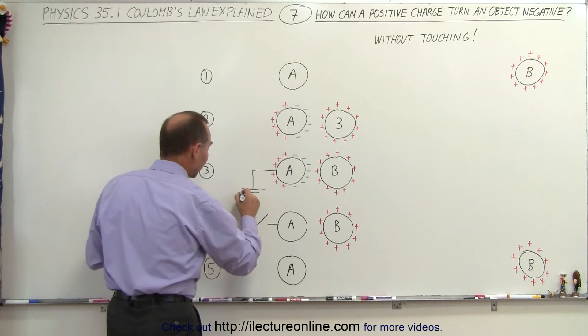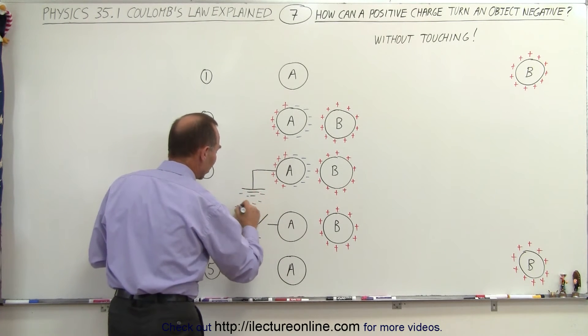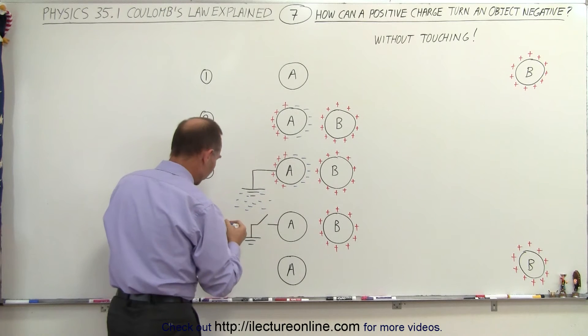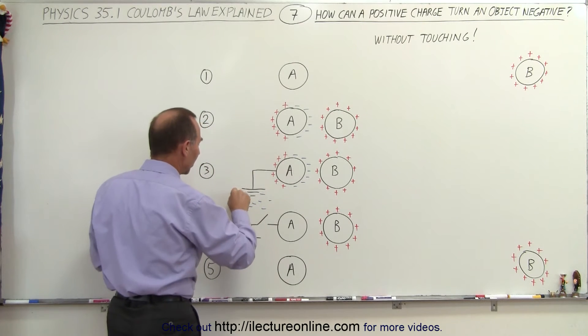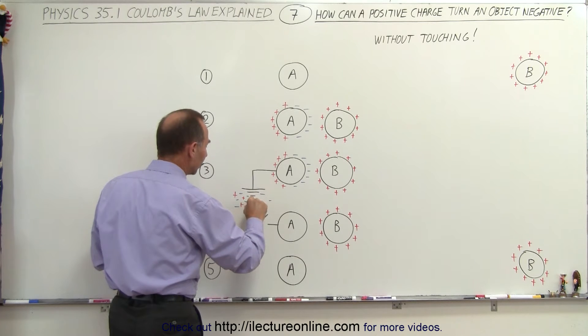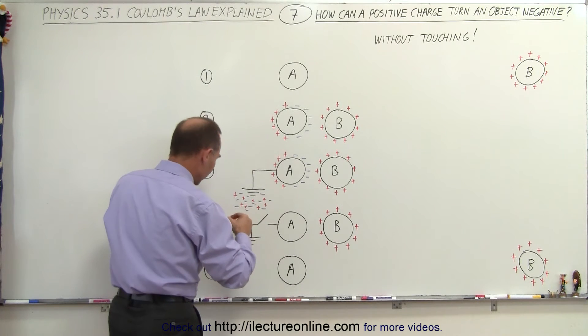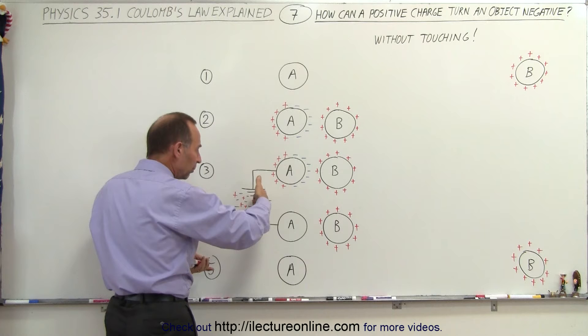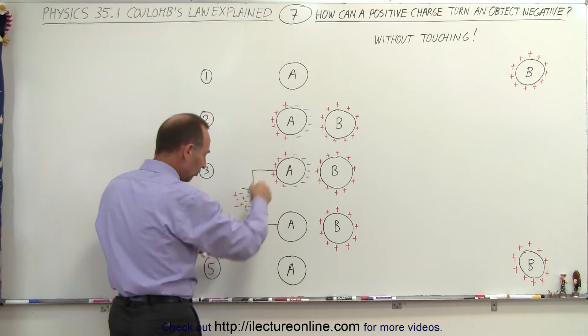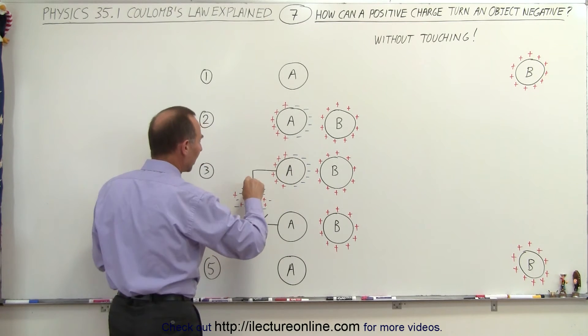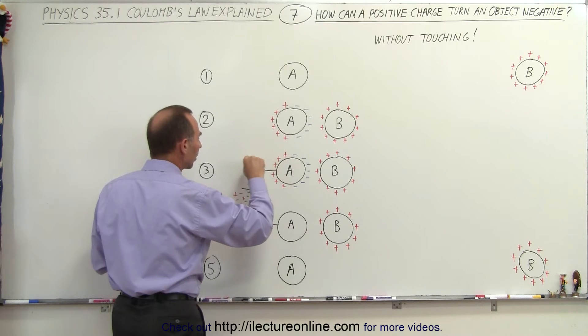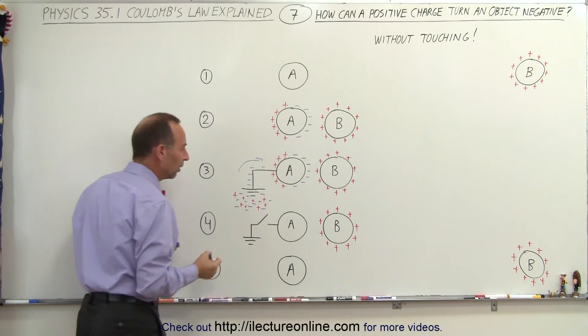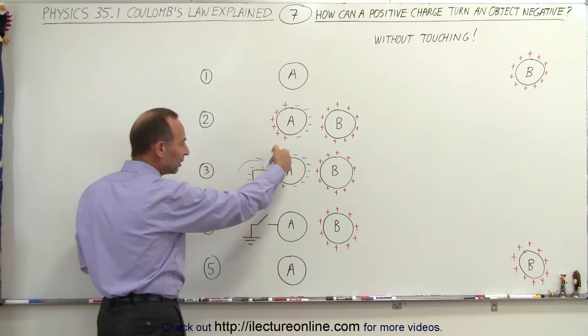And so all these negative charges, well actually they're not an excess because there should be just as many positive charges as there are negative charges in the ground, but since there's so many of them, some of the negative charges will be pulled towards the positive charges on this side of the sphere, and start flowing along the conductor towards the sphere, thus canceling out these charges.